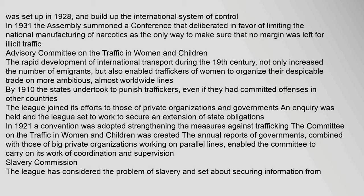The rapid development of international transport during the 19th century not only increased the number of emigrants but also enabled traffickers of women to organize their trade on more ambitious, almost worldwide lines. By 1910, states undertook to punish traffickers even if they had committed offenses in other countries. The League joined its efforts to those of private organizations and governments. An enquiry was held and the League worked to secure an extension of state obligations. In 1921, a convention was adopted strengthening the measures against trafficking; the committee on the traffic in women and children was created. Annual reports of governments, combined with those of private organizations, enabled the committee to carry on its work of coordination and supervision.